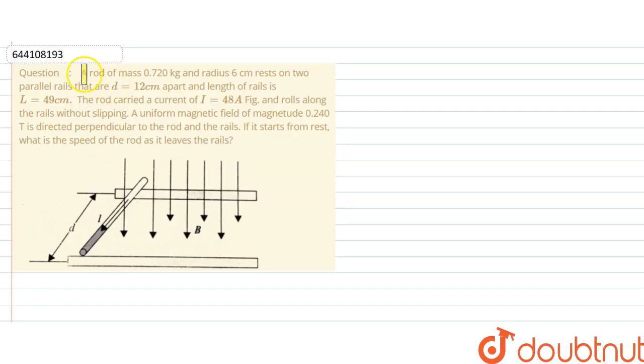The question says: a rod of mass 0.720 kg and 6 centimeters rests on two parallel rails that are 12 centimeters apart. The length of the rails is 49 centimeters, and the current the rod is carrying is 48 amperes.